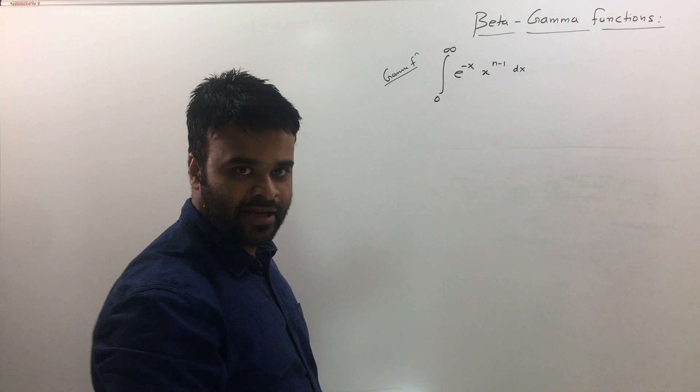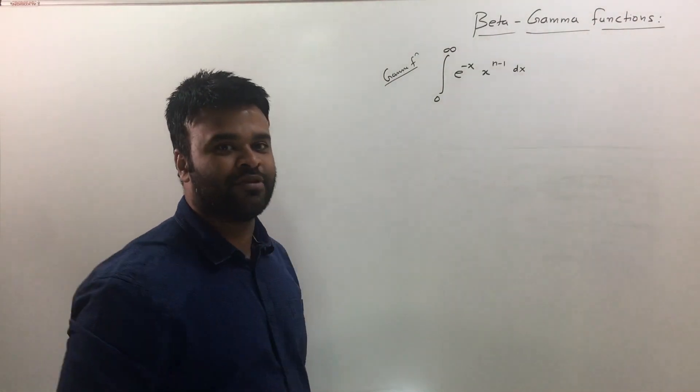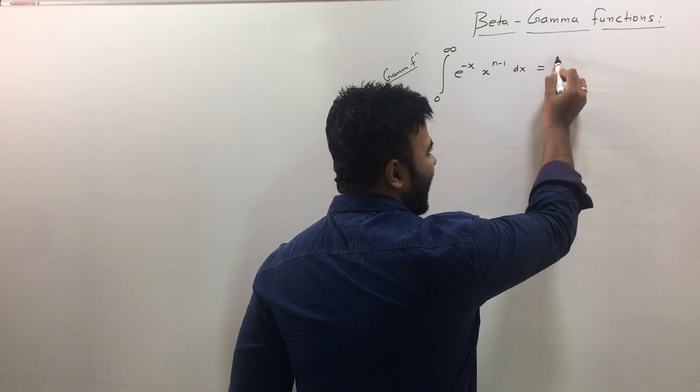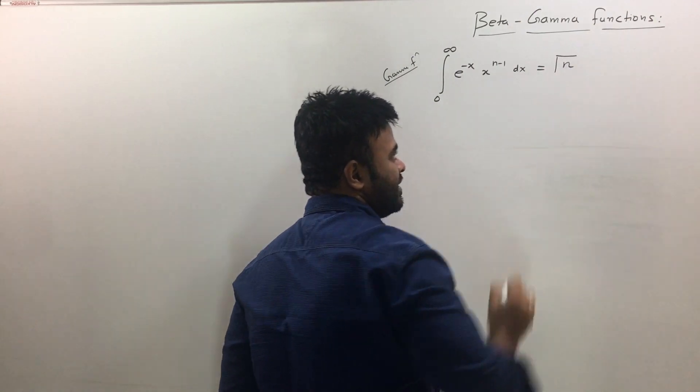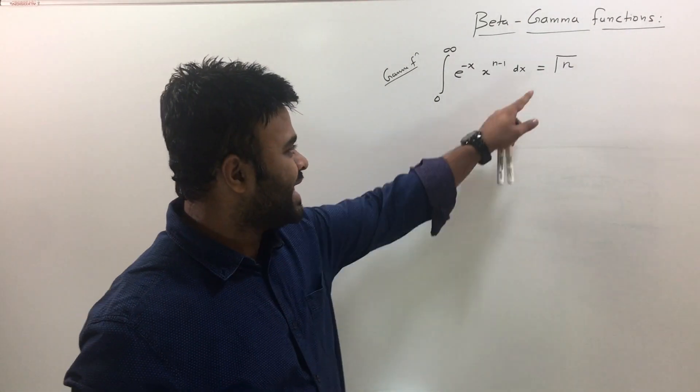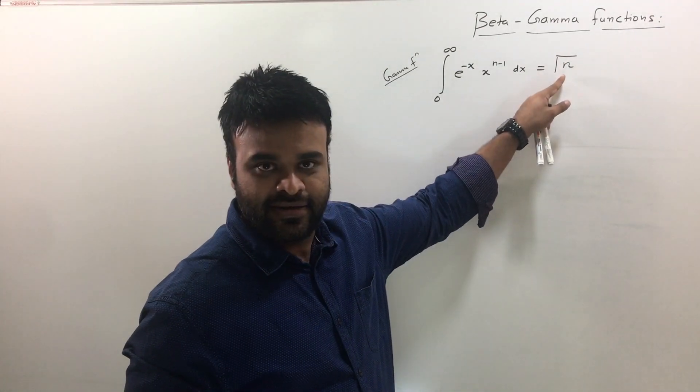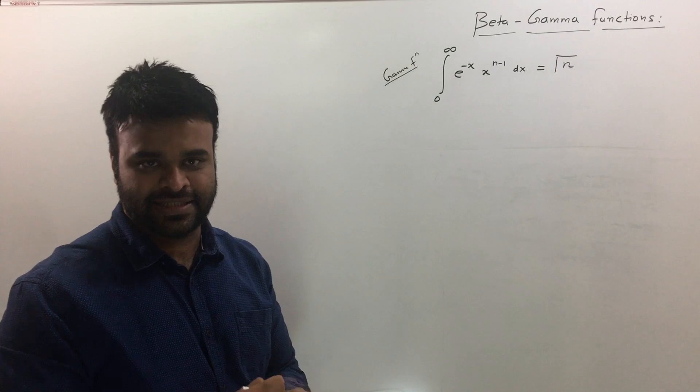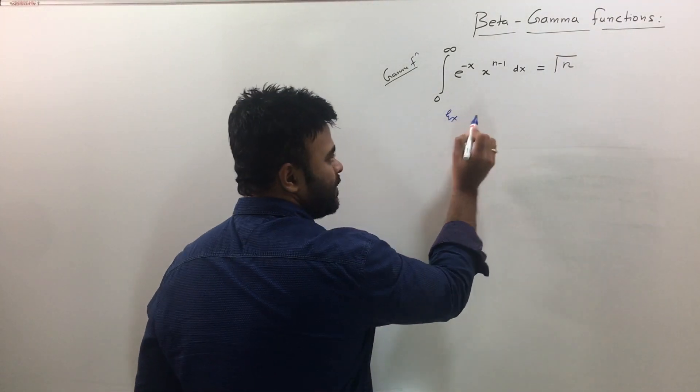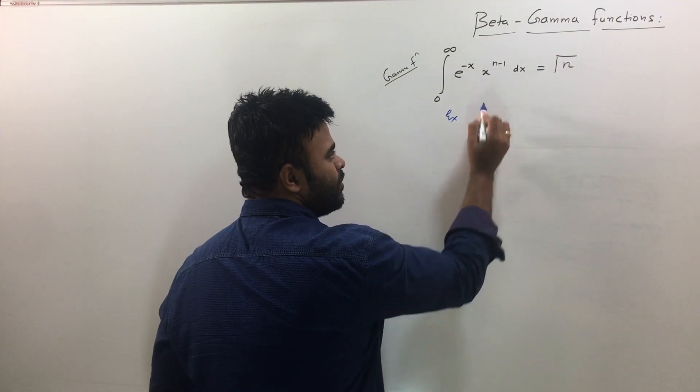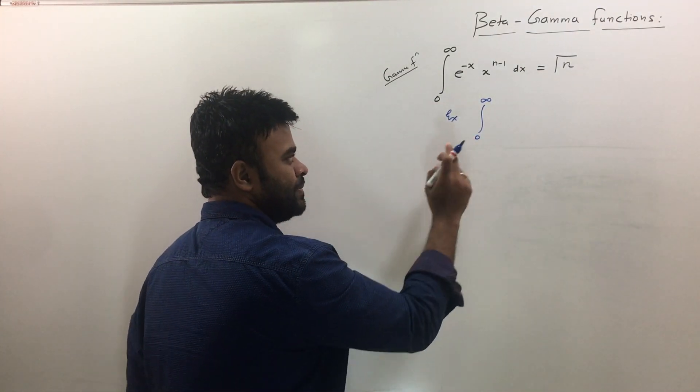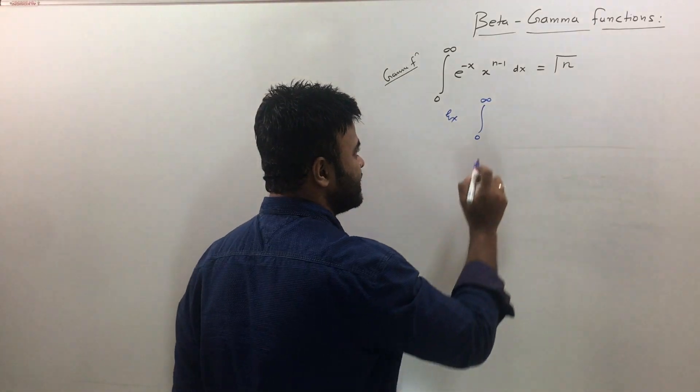When you have this integral the good news is you don't have to solve it, because the answer of this integration is ready and that is written as gamma n. Now just to make you understand this better I will take one example. The example is like this: supposing if I have integration 0 to infinity, it has to be exact same form, it has to match, it has to be exact 0 to infinity nothing else.